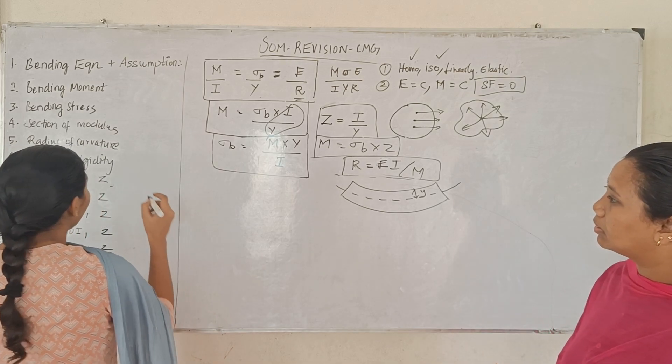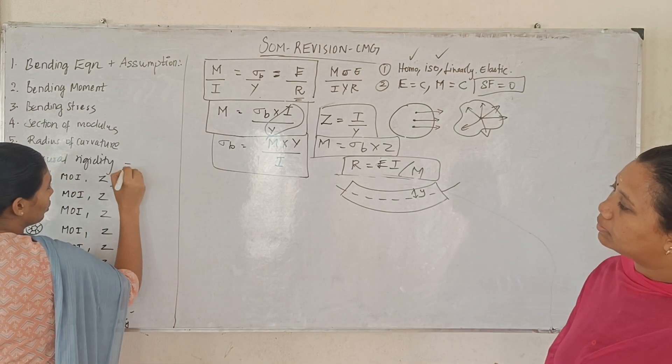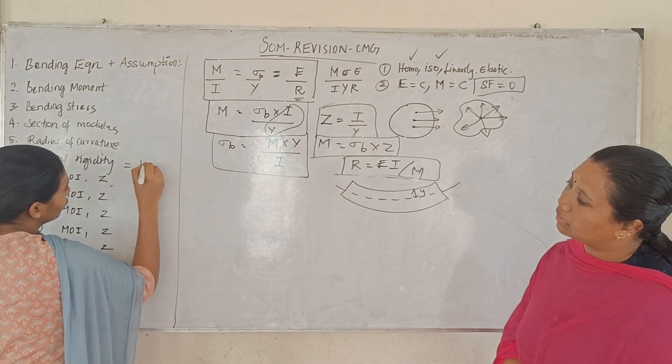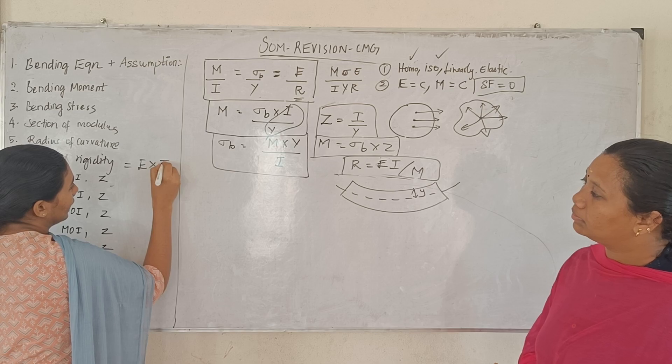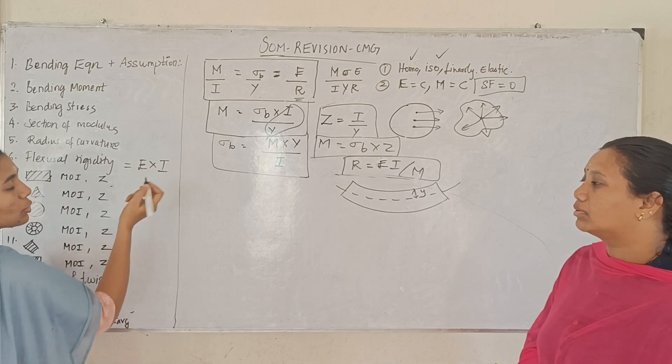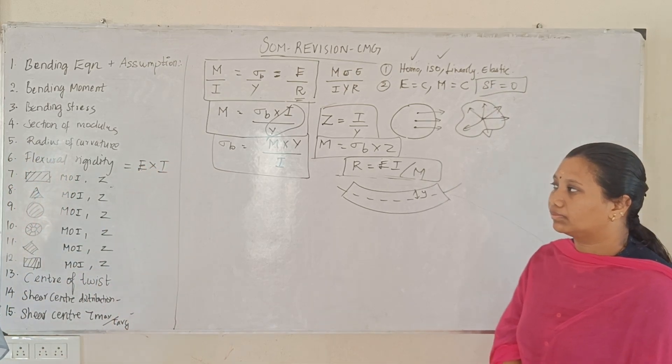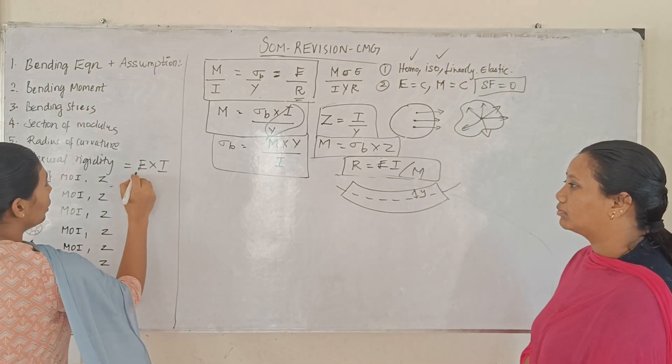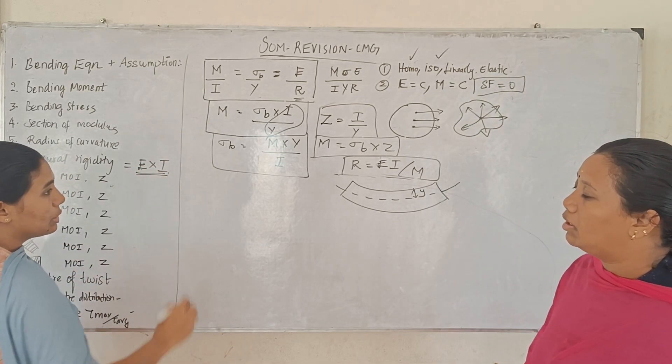Flexural rigidity is equal to E into I, where E is Young's modulus and I is moment of inertia.